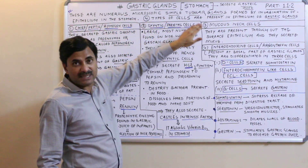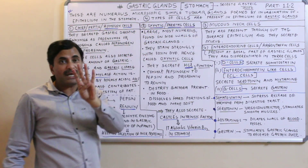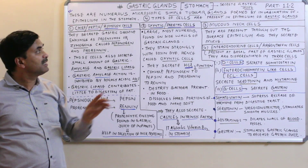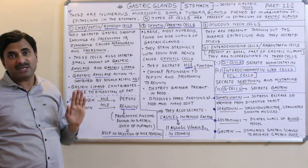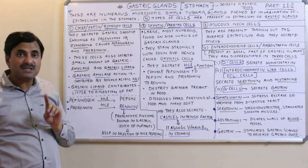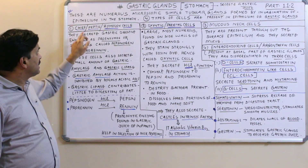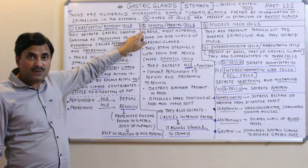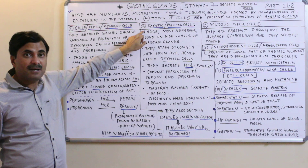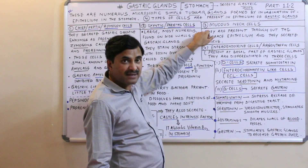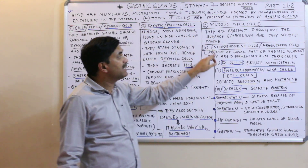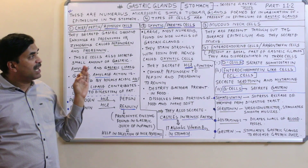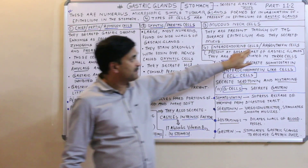Four types of cells are present in the epithelium of the gastric glands. These four cell types are: number one, chief cells; number two, oxyntic cells; number three, mucous neck cells; and number four, enteroendocrine cells, which are also popularly called argentaffin cells.